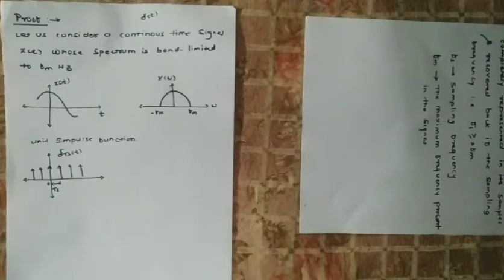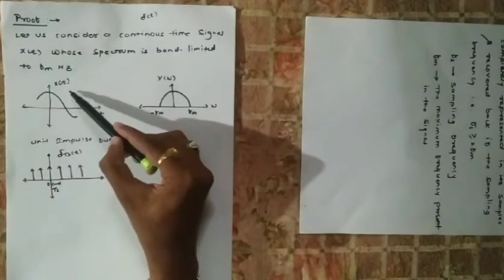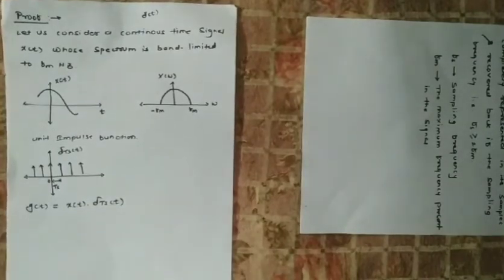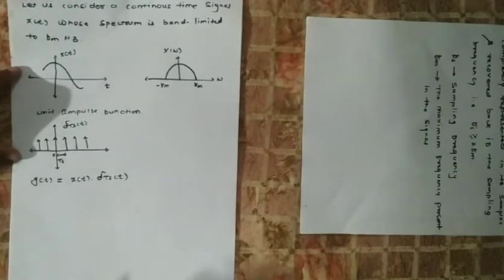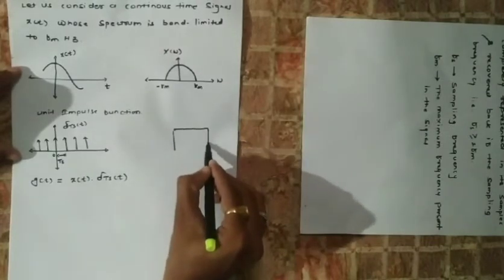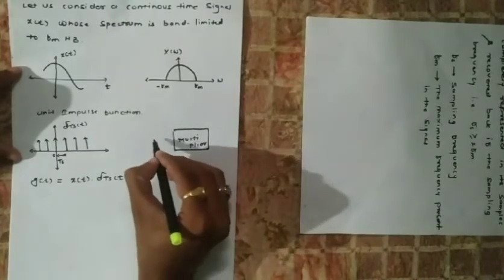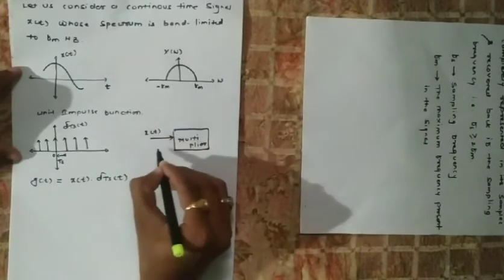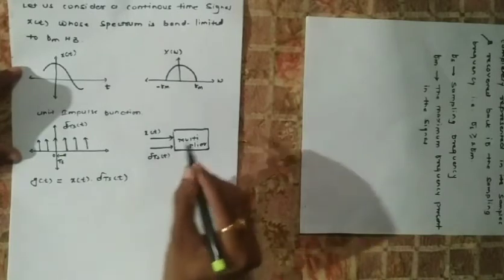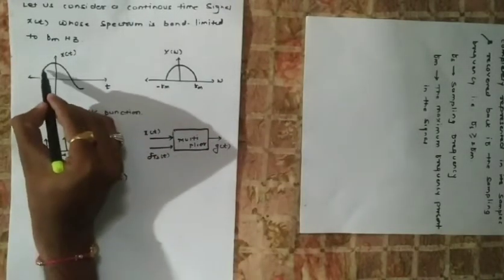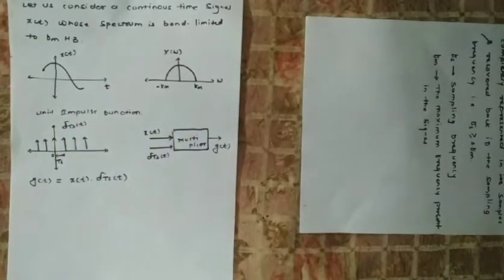To generate discrete time samples, we multiply the given function x(t) with delta_ts(t). Mathematically, let g(t) be any signal obtained by multiplying the input signal with the impulse train delta_ts(t). We can represent this as a multiplier block with two inputs: the first signal is x(t) and the other is the impulse train delta_ts(t), and the corresponding result is g(t).